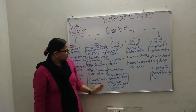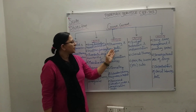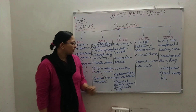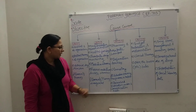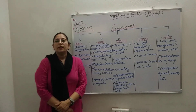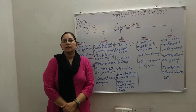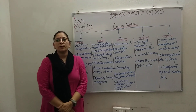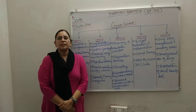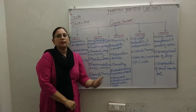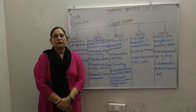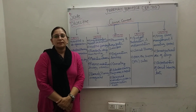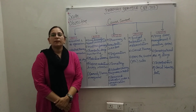Unit 3 consists of five parts: pharmacy and therapeutic committee, drug information services, patient counseling, education and training programs in hospitals, and prescribed medication orders and communication skills. In the first part, we will learn about the organization, functions, and policies of the pharmacy and therapeutic committee. In the second part, drug information services, we will cover drug and poison information centers, sources of drug information, computerized services, and storage and retrieval of information.